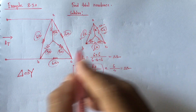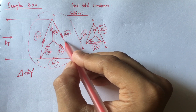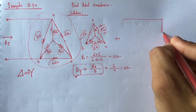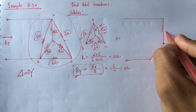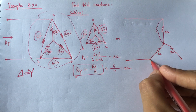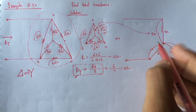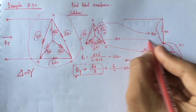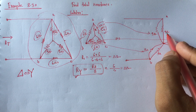Now, if we redraw the circuit by replacing the delta circuit with this Y of 2-ohm resistances, we get 9 ohm, 9 ohm, 9 ohm, and 9 ohm resistors, along with new 2-ohm resistors from the Y conversion. We can see that point A and point B are identified, and the 2-ohm and 9-ohm resistances are in parallel.